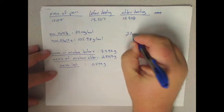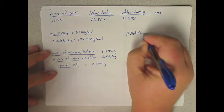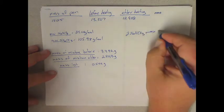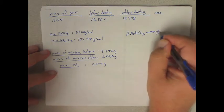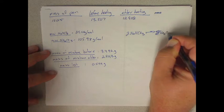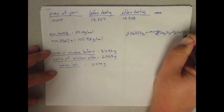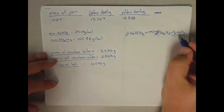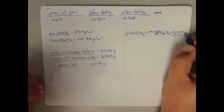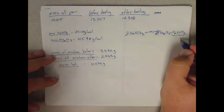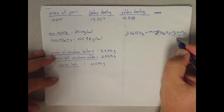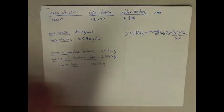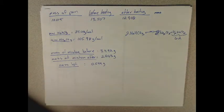That mass loss, if you think about it, this decomposition is due to the loss of water and CO2. So if we combine those together, water and CO2, that's going to have a mass of 18 plus 44, so that's going to have a mass of 62.